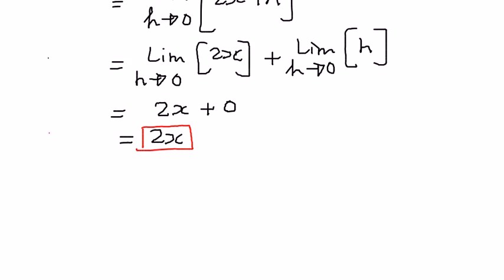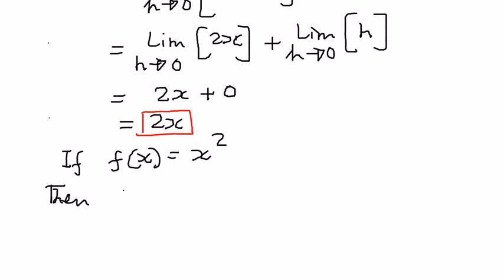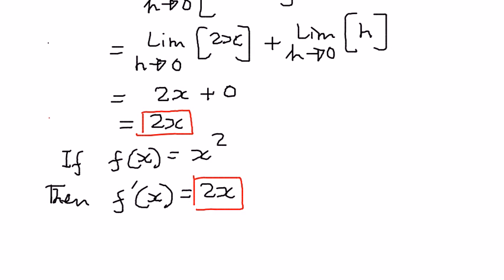So what have we done here? If the given function f of x is equal to x to the power of 2, then the slope, or the first derivative of this function, is equal to 2x — and that is what we have proved here. If the given function is x to the power of 2, then the first derivative of that function is equal to 2x. In my next presentation, we shall see more examples on how to find the derivative of a function using limits.